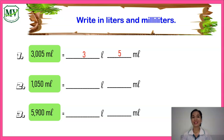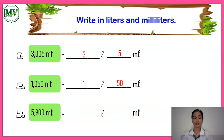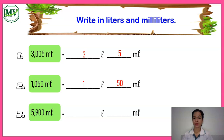The correct answer for number two is one liter and nine hundred milliliters. Last, number three: five thousand nine hundred milliliters. Five thousand nine hundred milliliters is equal to five liters and nine hundred milliliters.